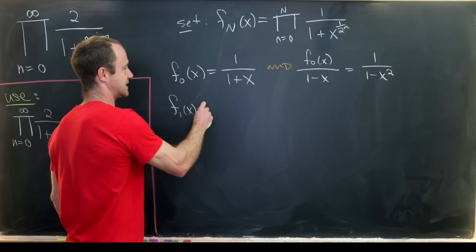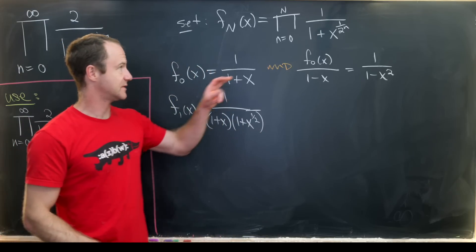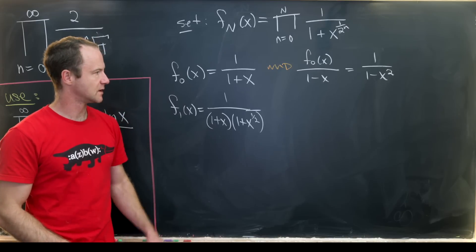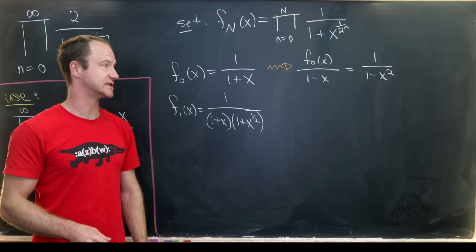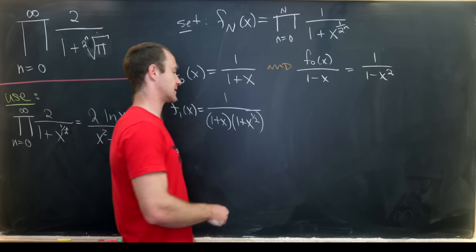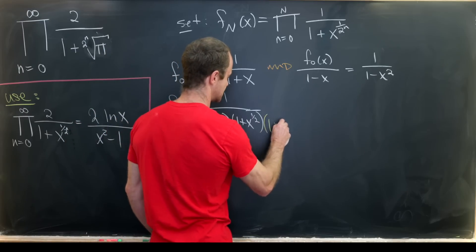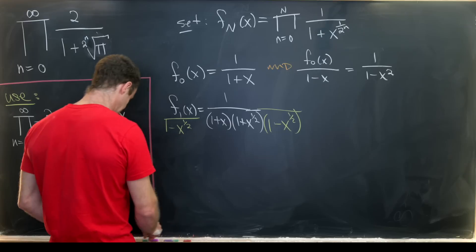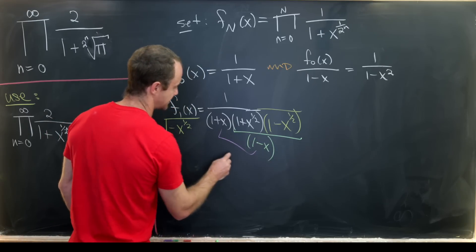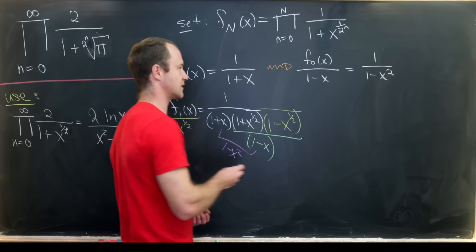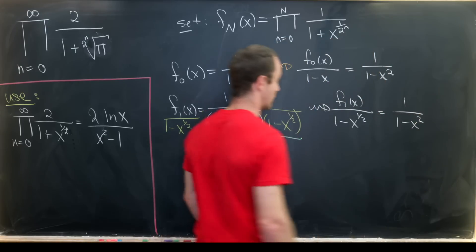Now let's look at f sub one of x, which is one over one plus x times one plus x to the half — the zeroth and first terms. Notice that if we multiply by one minus x to the half, we get a cascading operation. Dividing by one minus x to the half means these two multiply together to give one minus x, and then together they give one minus x squared. So f one of x over one minus x to the half equals one over one minus x squared — the same as before.